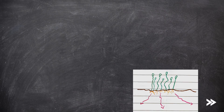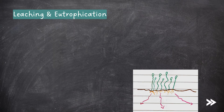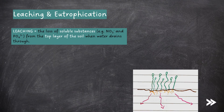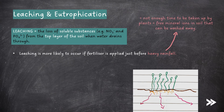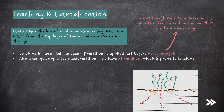Finally, we need to cover leaching and eutrophication. Leaching is the loss of soluble substances such as nitrate and phosphate ions from the top layer of the soil when water drains through. Leaching is more likely to occur if fertiliser is applied just before heavy rainfall, as there hasn't been enough time for plants to take in ions by active transport, meaning free mineral ions in the soil can be washed away. Similarly, when too much fertiliser is applied, the excess fertiliser is prone to leaching as there hasn't been enough time for plants to absorb it.